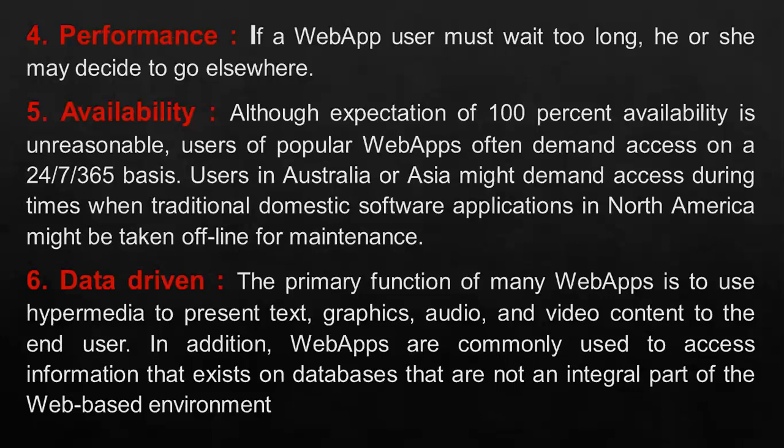Coming to data-driven — this attribute is about content in your web apps. In many cases, the primary function of a web app is to use hypermedia to present text, graphics, audio, and video content to end users. Data-driven apps have become a major growth engine for the worldwide software market. Analysts have predicted that smart computing software will become a trillion-dollar market and proclaimed that we are in the era of data-driven marketing and sales.